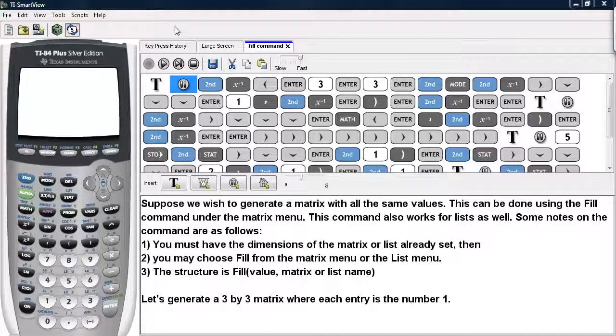Suppose we wish to generate a matrix with all the same values. This can be done using the Fill command under the matrix menu. This command also works for lists as well. Some notes on the command are as follows.